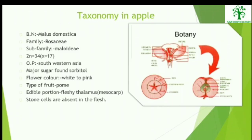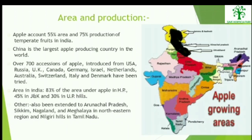The taxonomy of Apple: its botanical name is Malus domestica, its family is Rosaceae and subfamily is Maloideae. The major sugar found in apple is called sorbitol. Its flower colour ranges from white to pink and it is a pome type of fruit. The edible portion includes the fleshy thalamus. The stone cells are absent in its flesh.